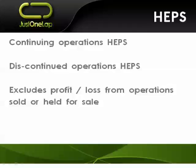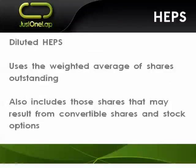You also get continuing operations HEPS and discontinued operations HEPS. This will exclude profit or losses from operations that have been sold or are held for sale. So if a company has sold an asset during the reporting period, it was in those numbers because they owned it for part of the time, but they'll also provide a HEPS figure without those operations — a continuing operations headline earnings per share from assets that remain in the business. That's the number to look at, since those discontinued or sold assets won't be generating profit going forward.